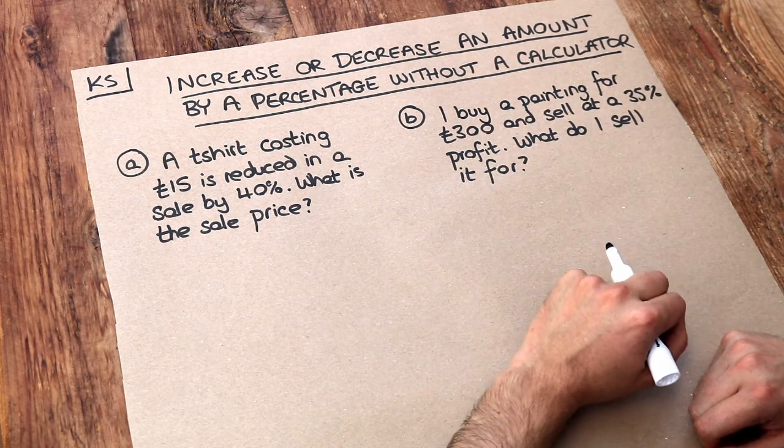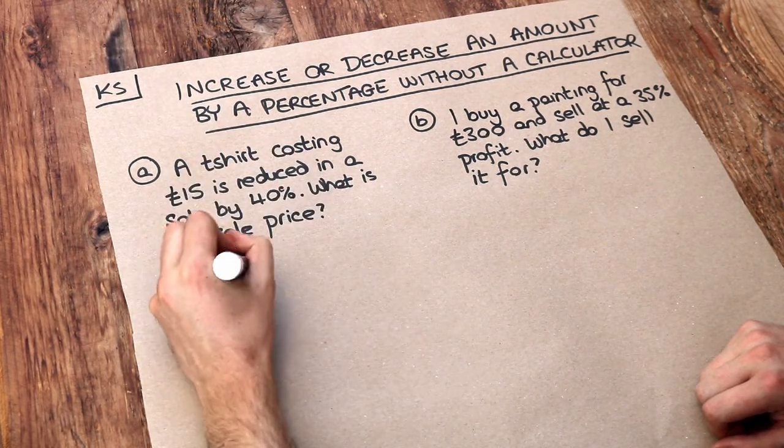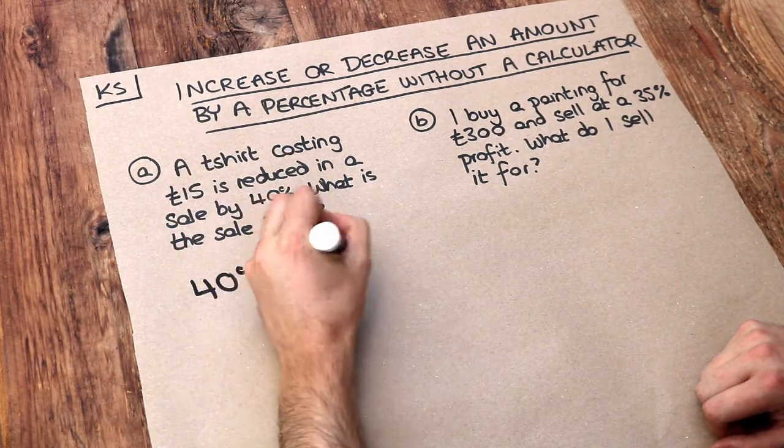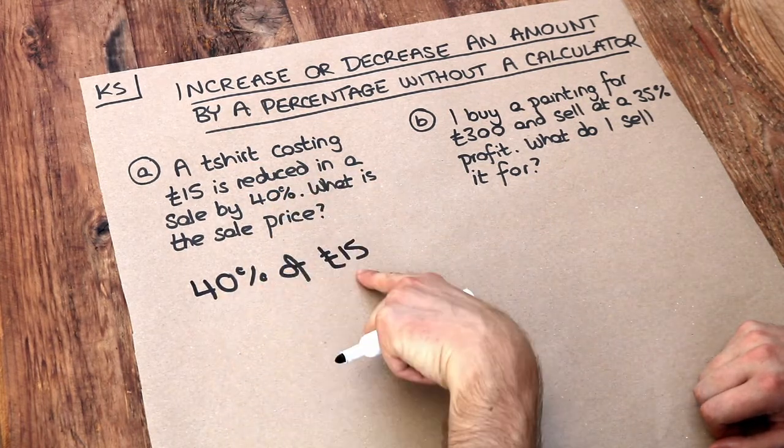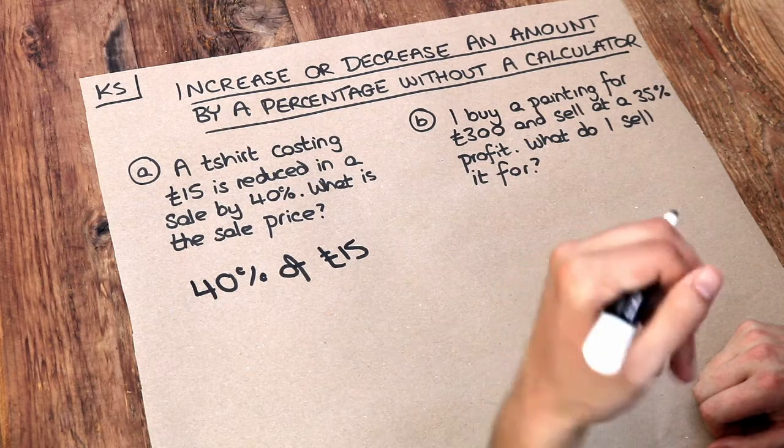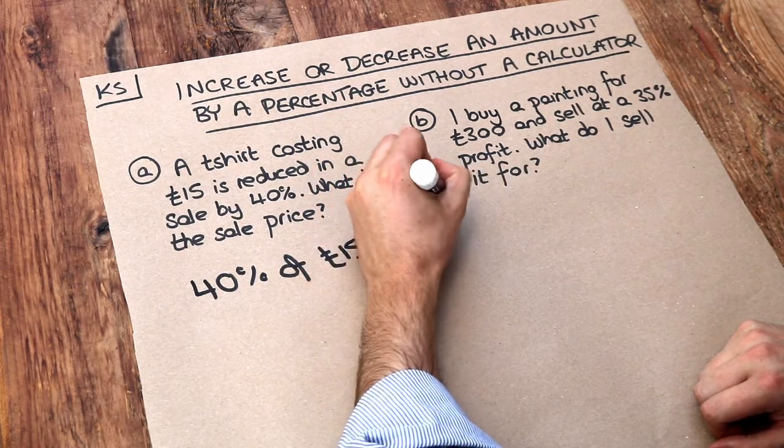Now if I'm not using a calculator I tend to first find what is 40% of £15, because if it's reduced by 40%, that 40% of £15 will be what the reduction is in the price.